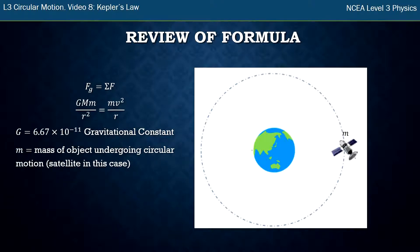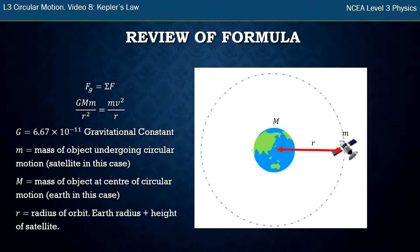Little m is the mass of the object undergoing circular motion, the satellite in this case, but could be the moon if it's orbiting the earth. Capital M is the mass of the object at the center, the earth in this picture. And r is the radius, the distance from the center of mass of one to the other, so the earth's radius plus the height of the satellite.